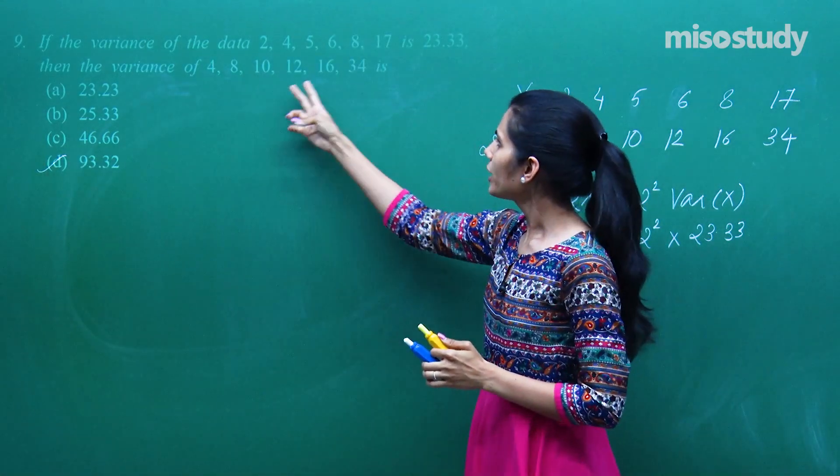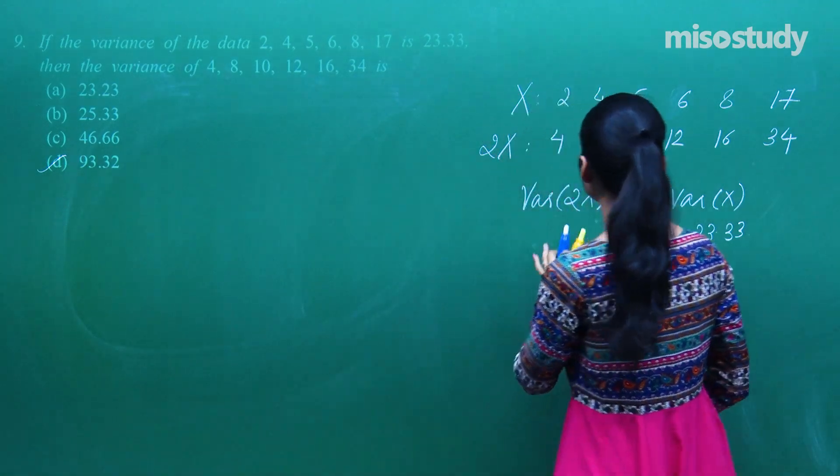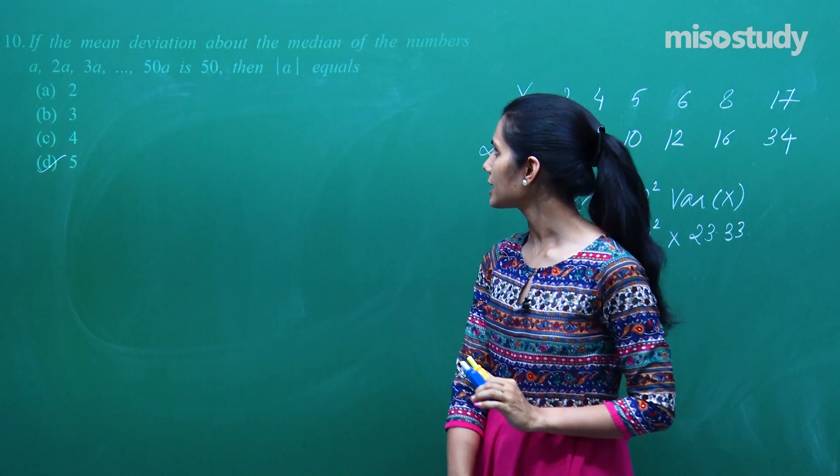Sirf ek relation pata hona chahiye tha. Variance of 2x is 2 square times variance of x.